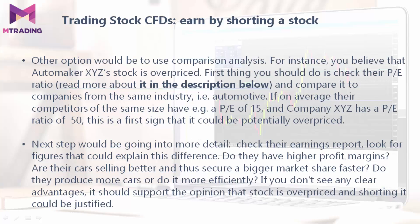Just a note — you can read more about the price-earnings ratio on the link left in the video description. Moving on, the next step would be going into more details. Check their earnings report and look for figures that could explain this difference. Do they have higher profit margins? Are the cars selling better and securing a bigger market share faster? Do they produce more cars or perhaps do it more efficiently? If you don't see any clear advantages, it should support the opinion that the stock is overpriced and shorting it could be justified.